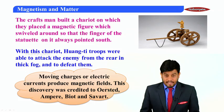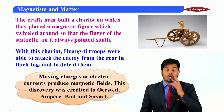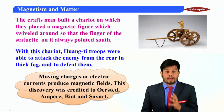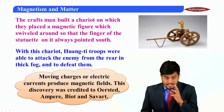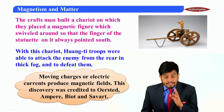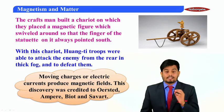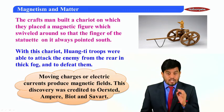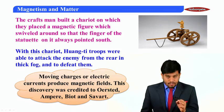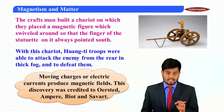Later science suggests that moving charges or electric currents produce magnetic fields. This discovery was credited to the scientists Oersted, Ampere, Biot and Savart.